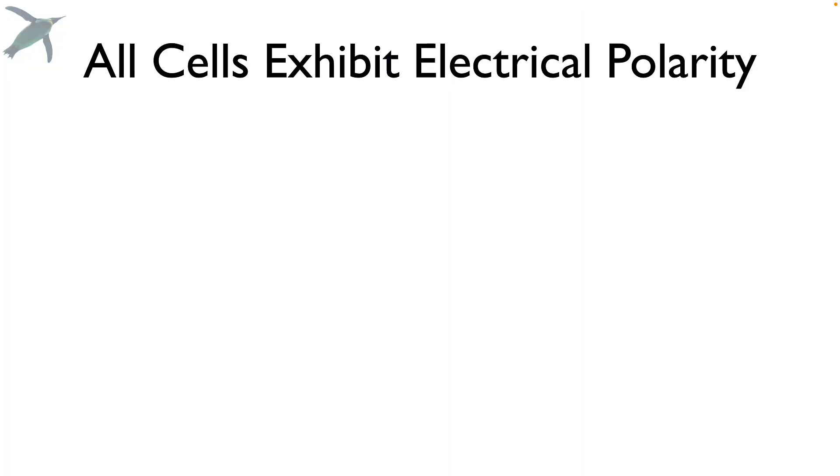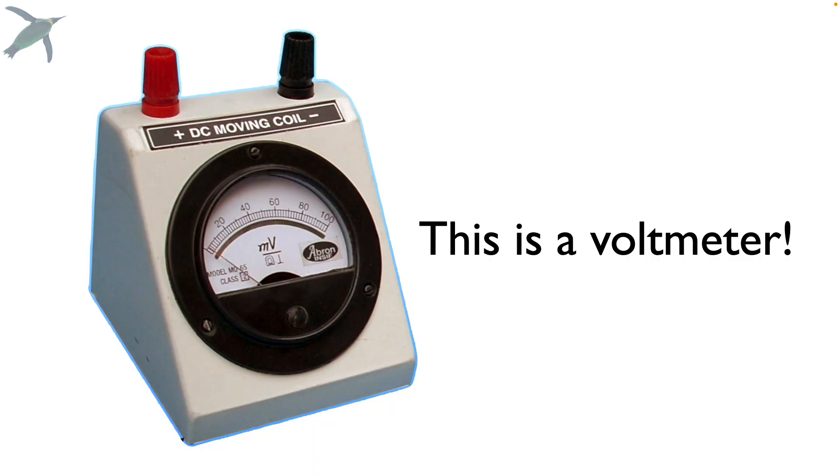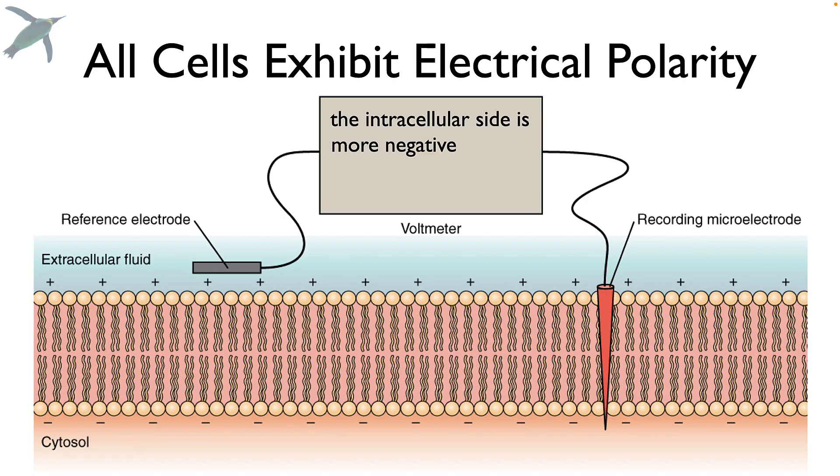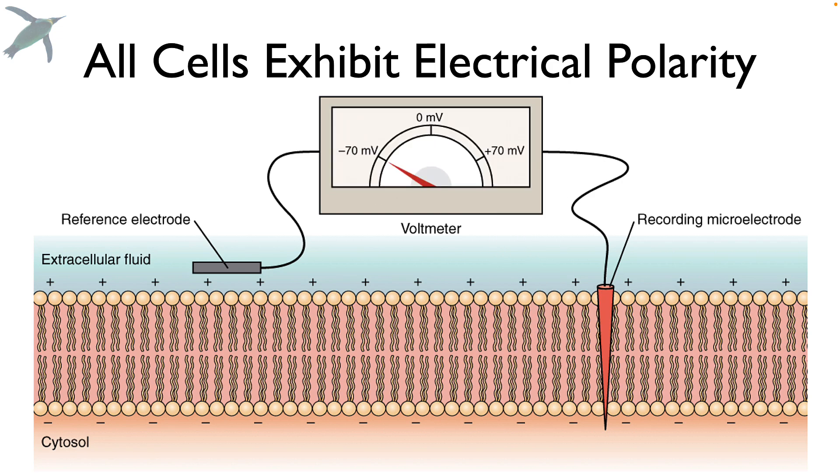All cells exhibit something called electrical polarity. So we're talking about electric charge across a membrane, which you can measure with a voltmeter. And if you do that, you will measure the intracellular side of a cell is more negative, while the extracellular side is more positive. By how much, I can hear you asking? By about minus 70 millivolts. So that's minus 70 thousandths of a volt.